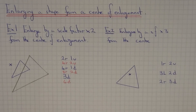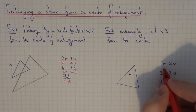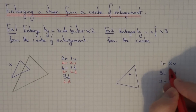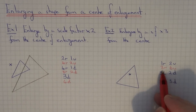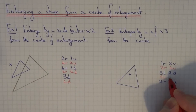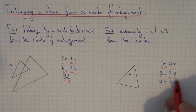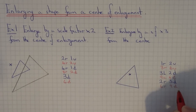This time our scale factor is times three, so we need to multiply all these distances by three. Multiplying by three gives us three right and six up for the first corner, nine left and six down for the next, and six right and nine down for the final corner.